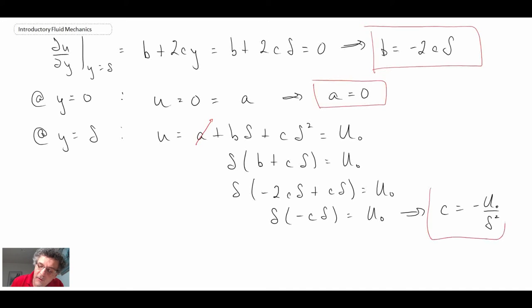Knowing c, we can go back and solve for b. Taking a, b, and c, and plugging them back into the expression that we had earlier for the velocity, the one with the quadratic profile, what we end up with is the following. That is the velocity profile that von Karman then worked with.